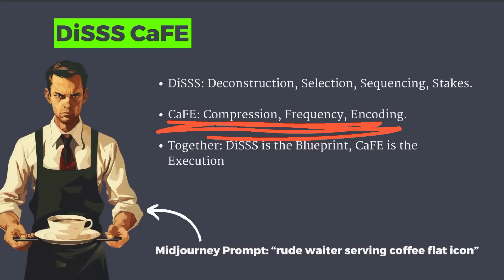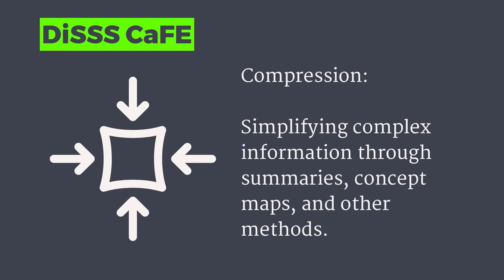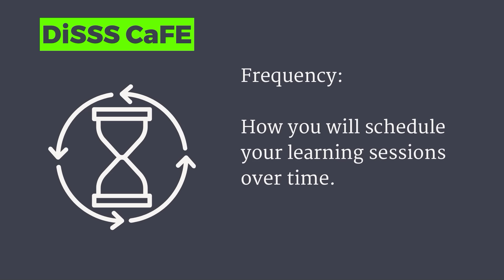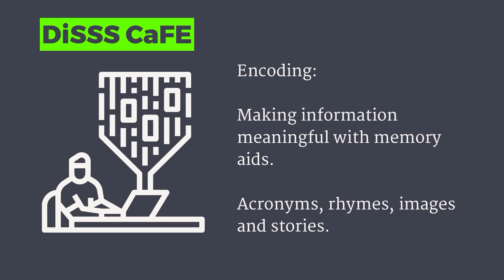Moving on to the CAFE section. Compression involves finding core concepts or key patterns within a subject — think creating summaries, concept maps, or finding other ways to simplify complex information. Frequency is how you're going to expose yourself to this information, learning it over time.